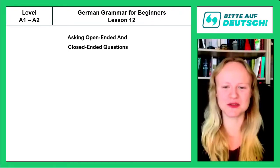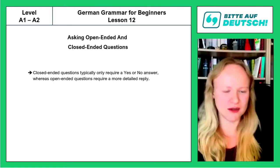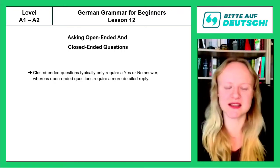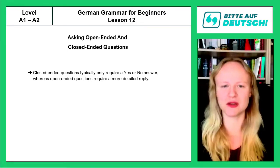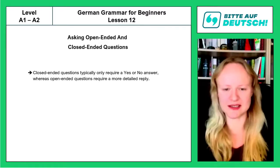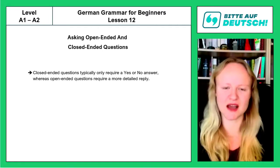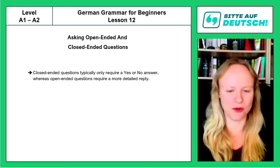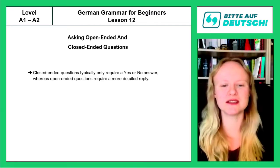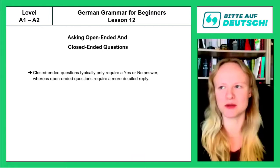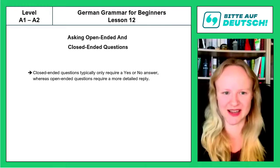What is actually the difference between an open-ended and a closed-ended question? Closed-ended questions typically only require an answer that can either be yes or no. For example, 'Do you like pizza?' — you can of course give an explanation, but we consider this a closed-ended question because the answer is complete by saying yes or no. In contrast, an open-ended question requires a much more detailed reply — 'Why do you like pizza?' You cannot answer with yes or no to a question like that.